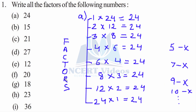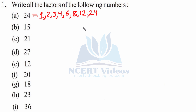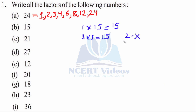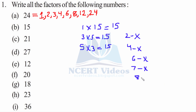Likewise, we will do 15. 1 into 15 gives you 15, so 1 will always be a factor of any number. 3 into 5 is 15. 2 is not, 4 is not a factor. 5 is — 5 times 3 is 15. Likewise, 6, 7, 8, and 9 are not factors.